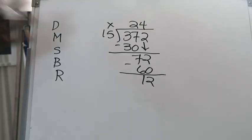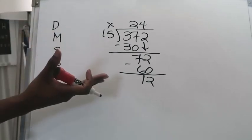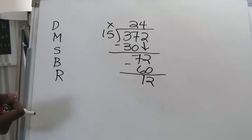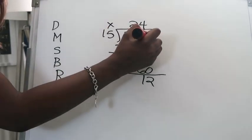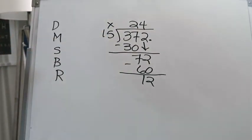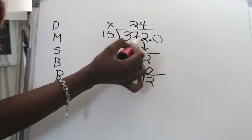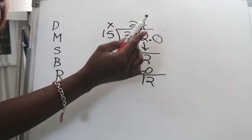4 times 15 is going to be 60 and 72 minus 60 is going to give me 12. So typically what you guys have been taught to do is to say okay well that would be your remainder because 15 cannot go into 12 and so you would express this as 24 remainder 12. Now what we're showing you is that you can add a decimal point and it's very crucial that you add that decimal point and a zero.